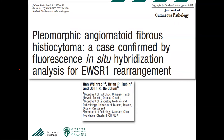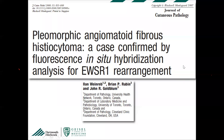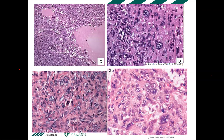One subtype that can create significant problems is the so-called pleomorphic angiomatoid fibrous histiocytoma. It shows marked cytologic atypia to the extent that it can be confused with pleomorphic undifferentiated sarcoma. If you take it out of context and show it to me I would say sure, it looks like an undifferentiated pleomorphic sarcoma — but it's actually the pleomorphic variant of AFH. It looks very sarcomatoid.